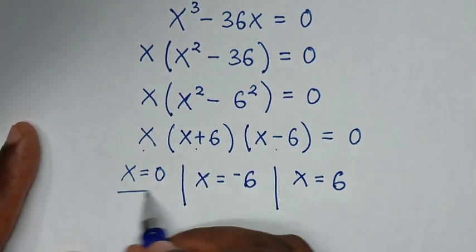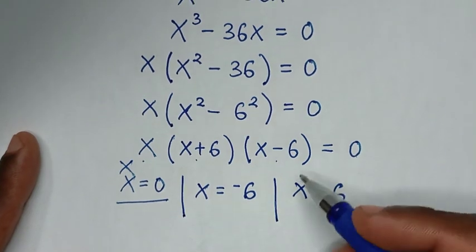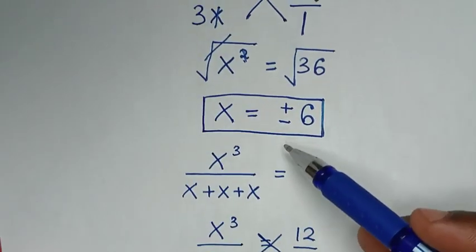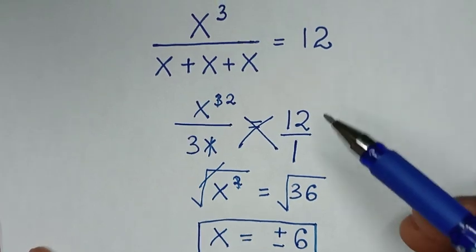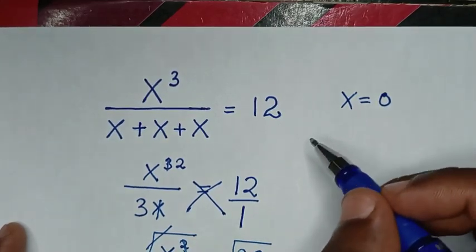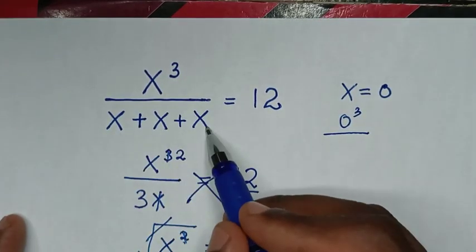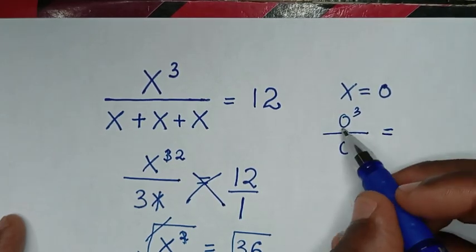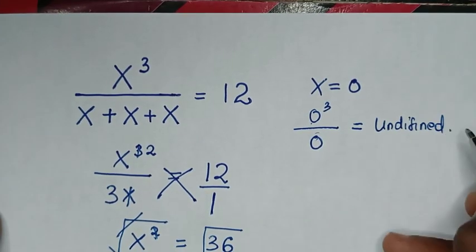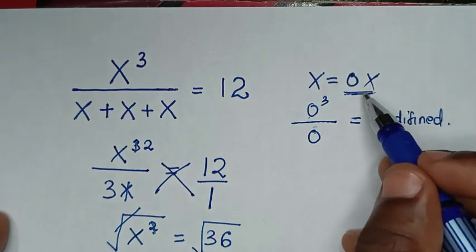But for x is equal to 0, this is not the correct answer. So this solution from the second method, we'll reject it — this is not a sufficient method. To check: if x equals 0, then x power 3 gives 0 power 3 over 0 plus 0 plus 0, which is 0 divided by 0 — it is undefined. So the value x equal to 0 is not a correct answer, and the second method is not the correct method.